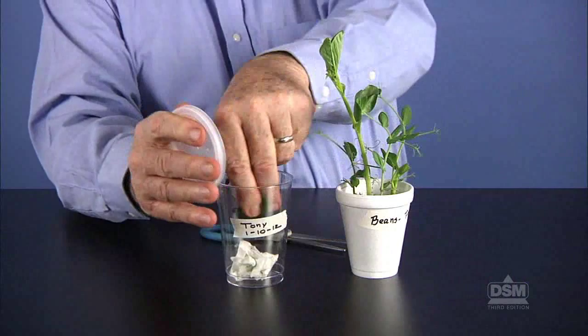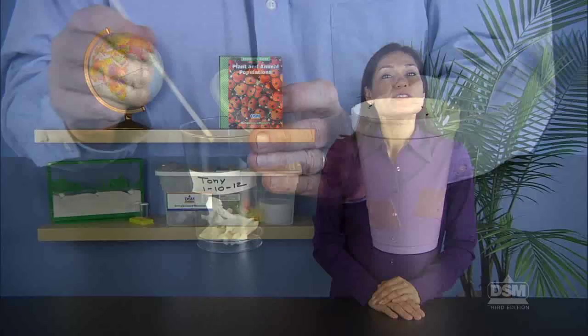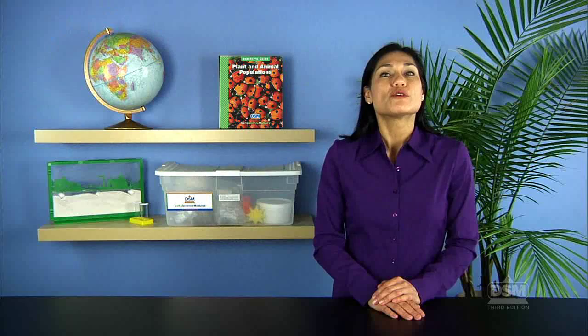Have them use the pipe cleaners to transfer 10 aphids from the bean plant onto the bean leaves in the container and replace the lid. Tell students to record in the population chart on their activity sheets the observation day, zero, today's date, and the number of aphids and ladybugs in their team's container.